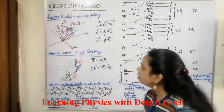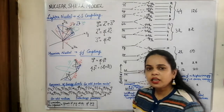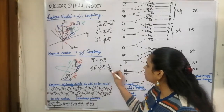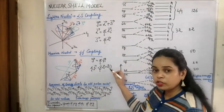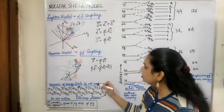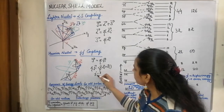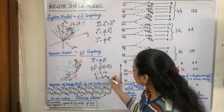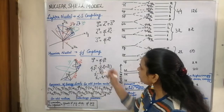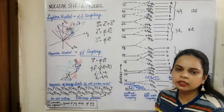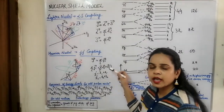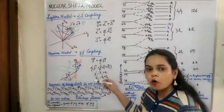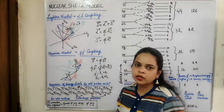In heavier nuclei, JJ coupling is preferred. Here, the orbital quanta and spin quanta of each individual nucleon add up to give an individual J value: J1 equals L1 plus S1, J2 equals L2 plus S2. All individual J values are then combined to form the total angular momentum capital J. So individual orbital and spin momenta first combine per nucleon, then all J's combine for the total.